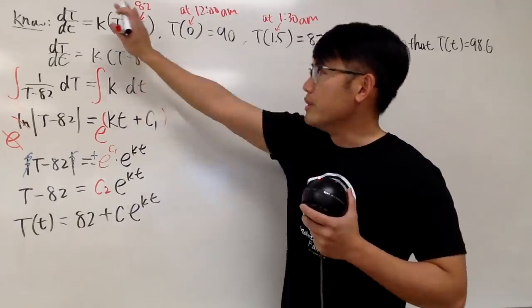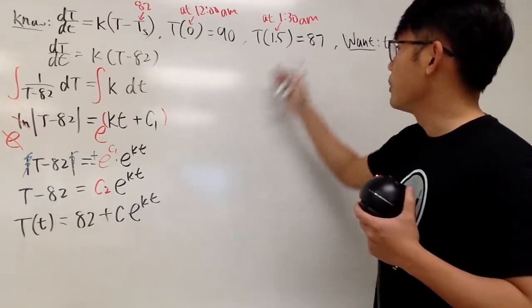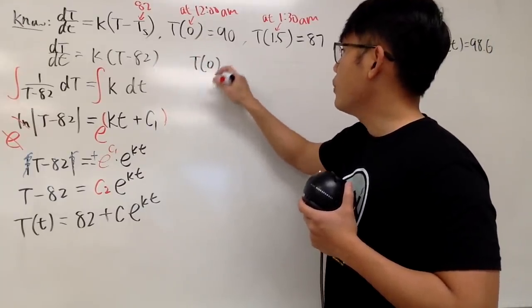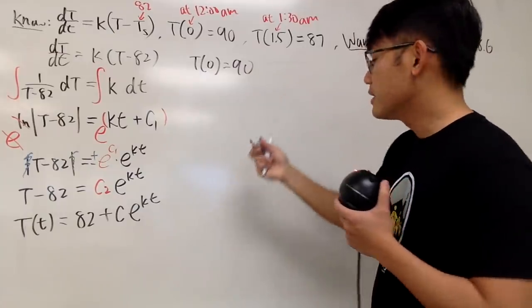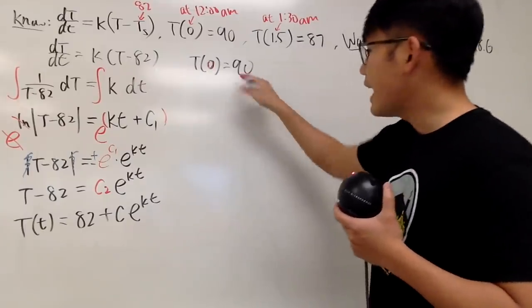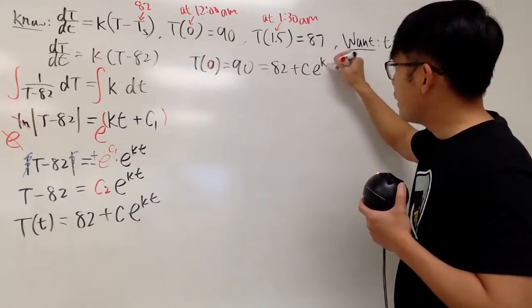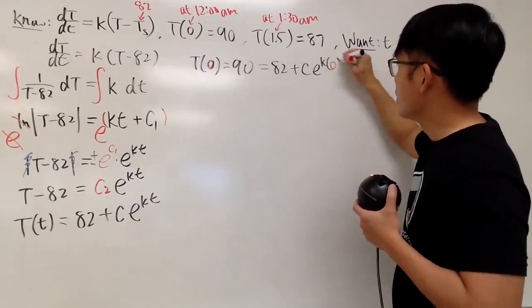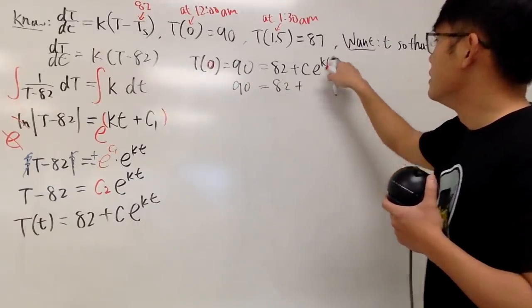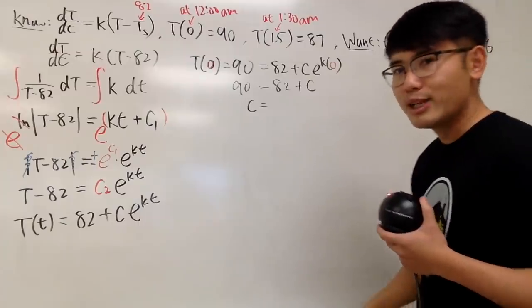Using T(0) = 90: substituting t = 0 gives 90 = 82 + c·e^(k·0). Since e^0 = 1, we get 90 = 82 + c. Subtracting 82 from both sides, c = 8.